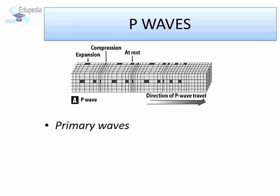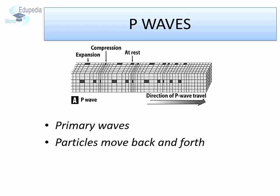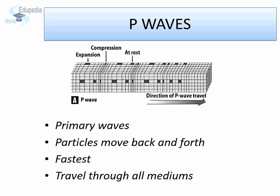In P waves, the particles vibrate back and forth along the direction of wave propagation, causing a series of compressions and rarefactions. P waves are the fastest of all, but they do not cause great destruction. They are the first ones to be received at a seismic recording station, and animals and reptiles can feel them well ahead of an earthquake. They can travel through all mediums.